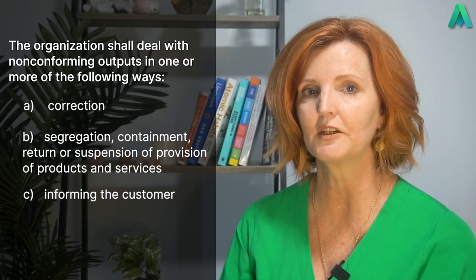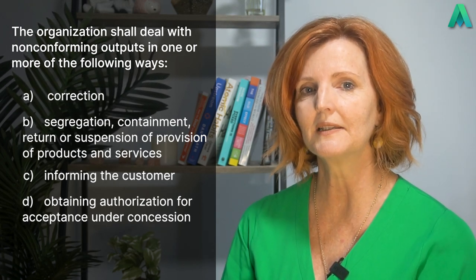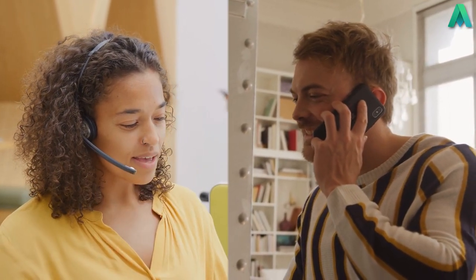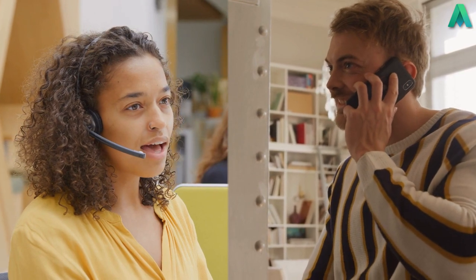The next option this clause gives us is C, informing the customer. If our customer specifically requested this product to be green and we're not able to repaint it, we would communicate this to the customer so they are kept in the loop of what the corrective action will be. This leads into point D, obtaining authorization for acceptance under concession, which means that possibly the customer is okay for the product to be red instead of green — it doesn't really impact the use of the product and they are happy to accept it. They might receive a discount or a credit for goodwill, but the point is that the customer will take possession of the item even if it doesn't meet their initial requirements.